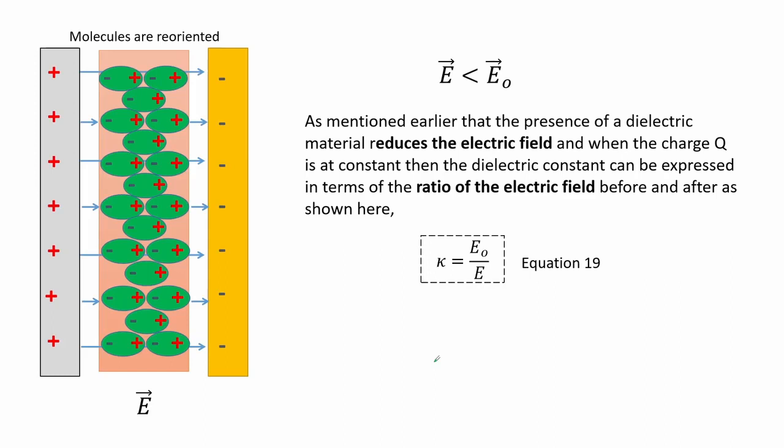The presence of a dielectric material reduces the electric field, and when the charge Q is constant, the dielectric constant can be expressed as the ratio of the electric field before and after insertion of the dielectric, as shown in equation 19.